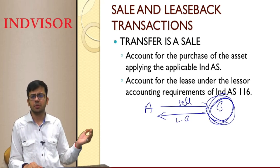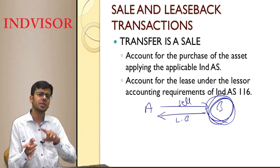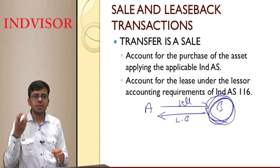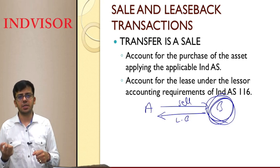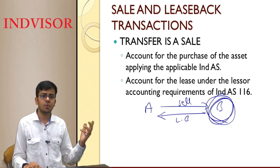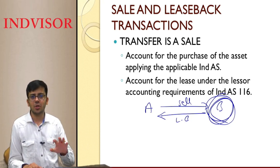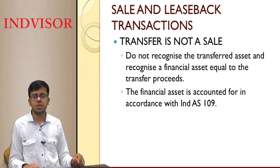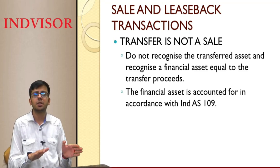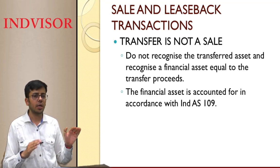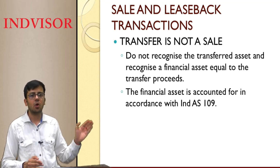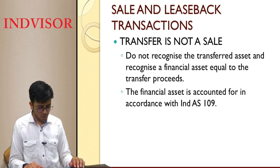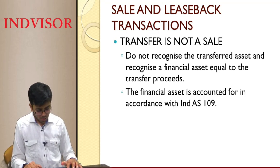B (the lessor in a sale and leaseback) will continue to account for rent received as per Ind AS 116 — either as finance lease or operating lease depending on the situation. If the transfer does not qualify as a sale, it is treated as a loan given to A and accounted as loans and advances per Ind AS 109, for both lessee and lessor.